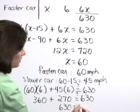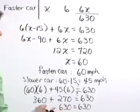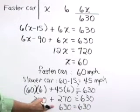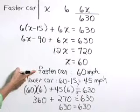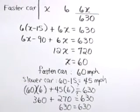It sure is. We get a true statement here as we check those solutions. So we feel very comfortable with this answer that the faster car travels 60 miles per hour, the slower car 45 miles per hour.